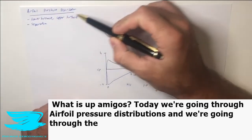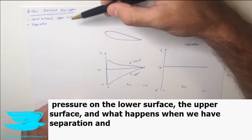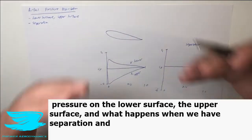What is up amigos? Today we're going through airfoil pressure distributions on the lower surface, the upper surface, and what happens when we have separation and increased angle of attack.